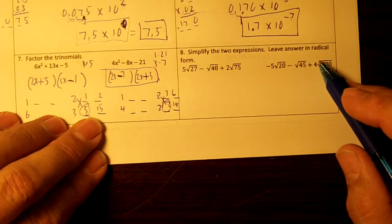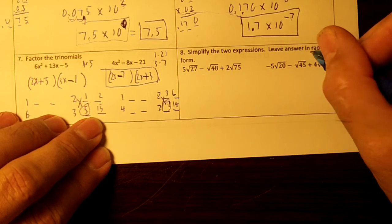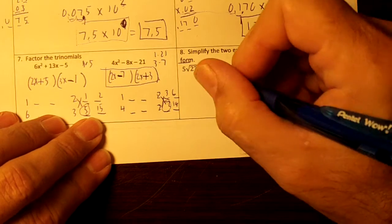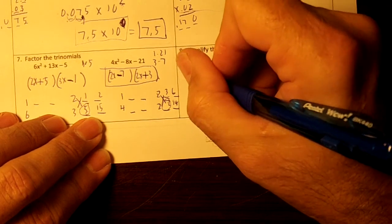Simplify the radical expressions. Leave the answer in radical form. Radicals rule. Okay, so 27. Let's put it as 9 times 3. Remember, it helps if you have your...